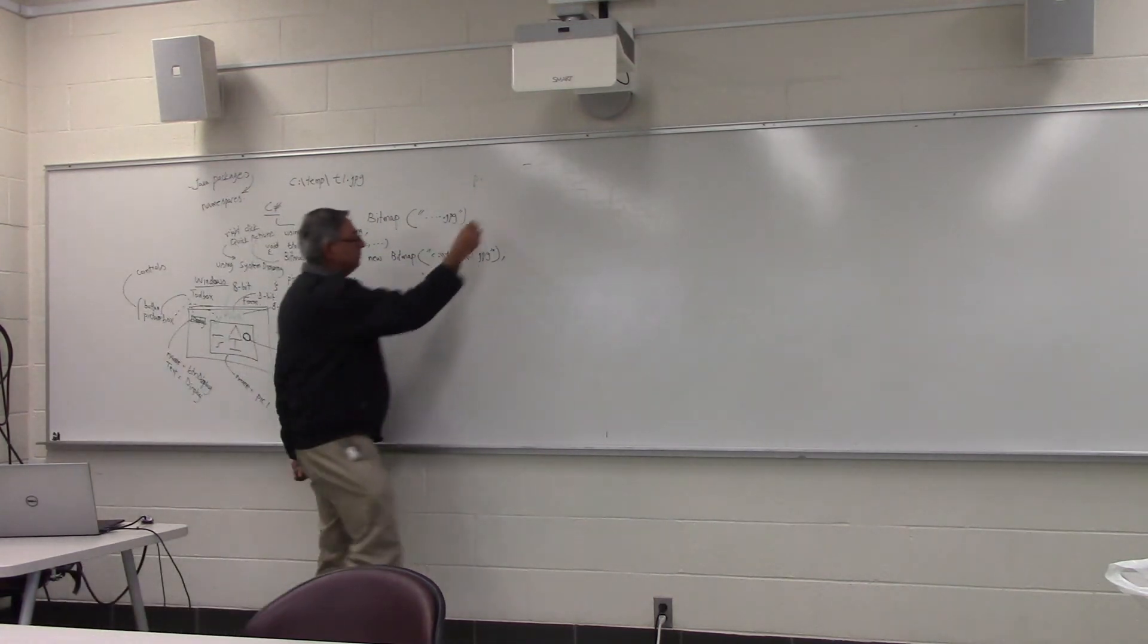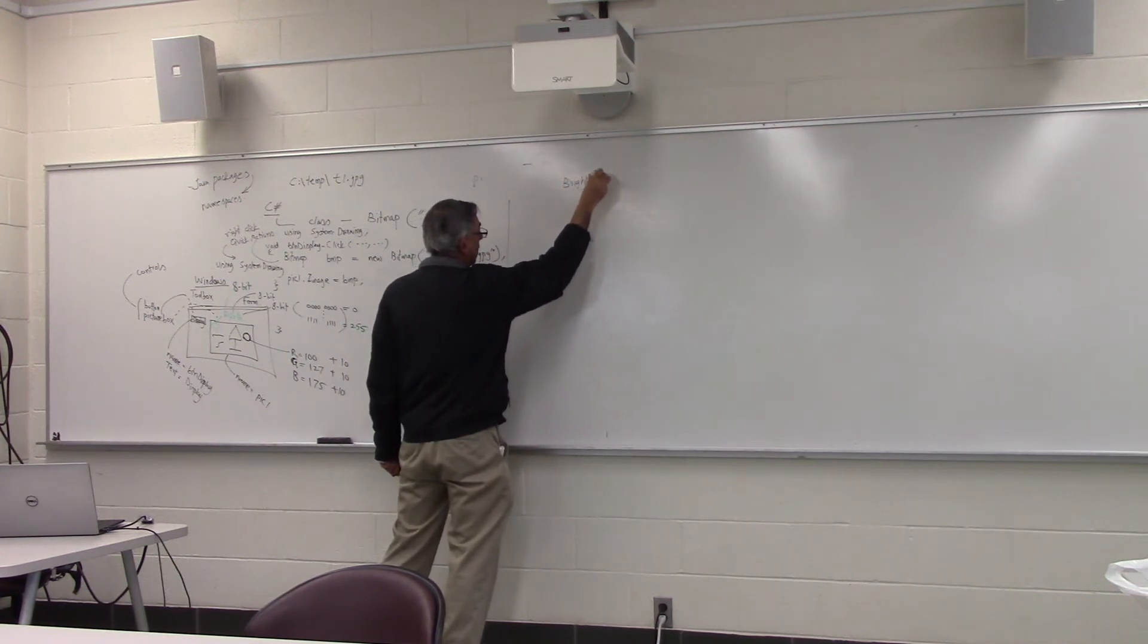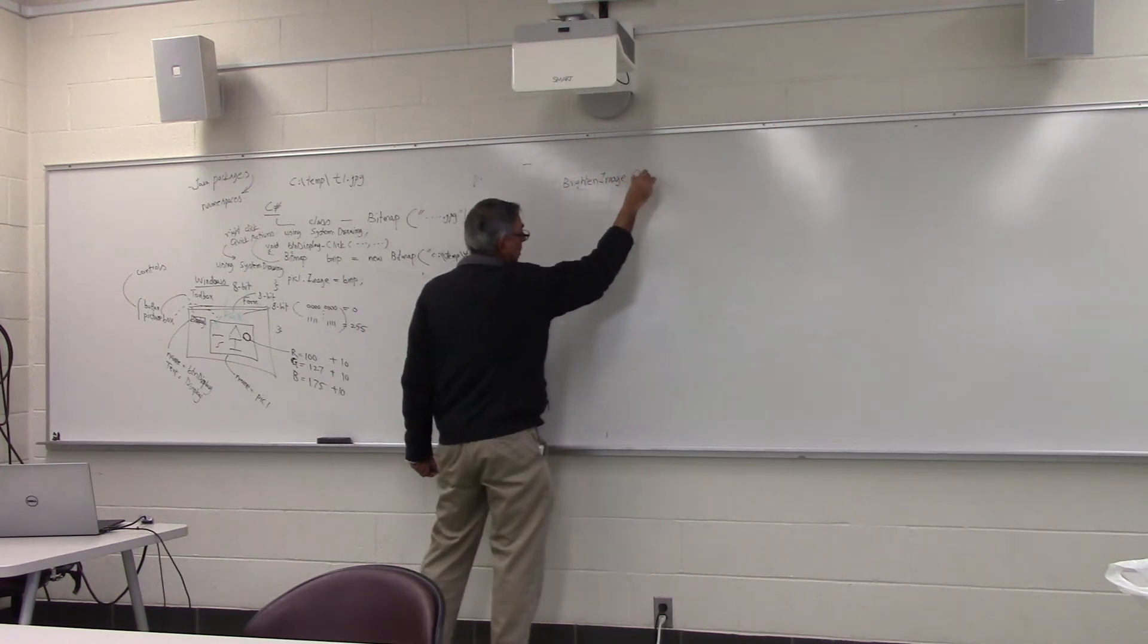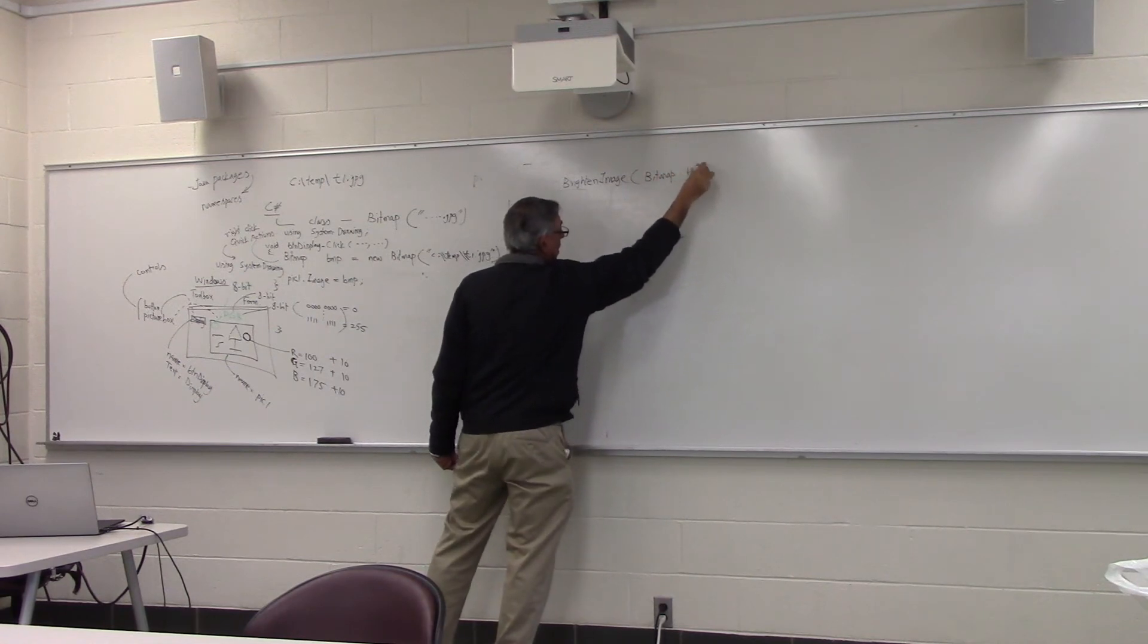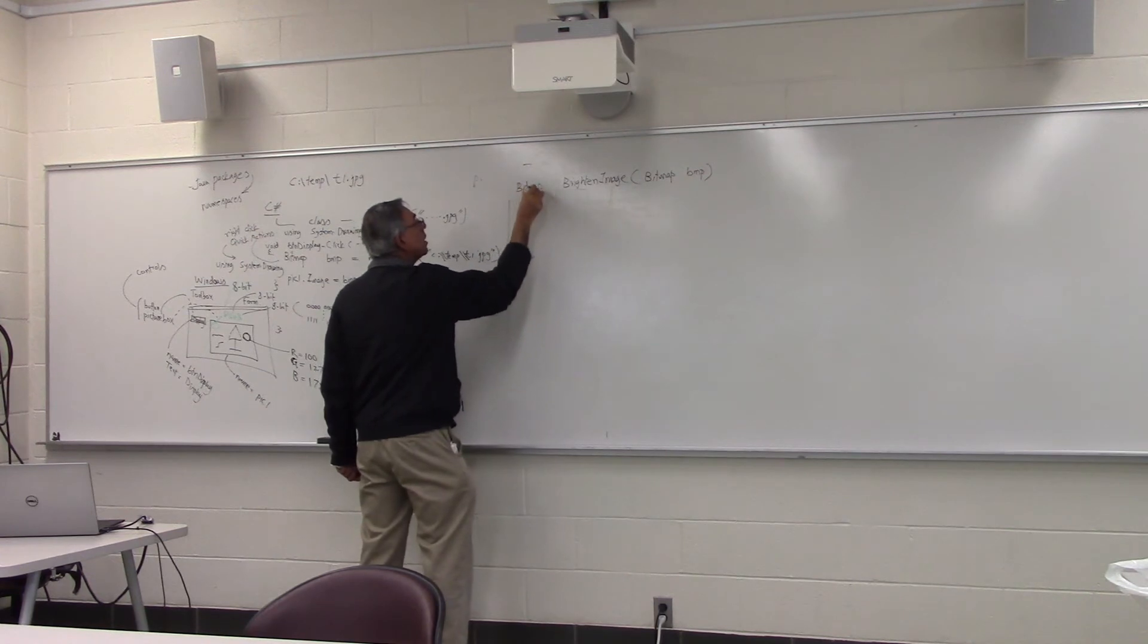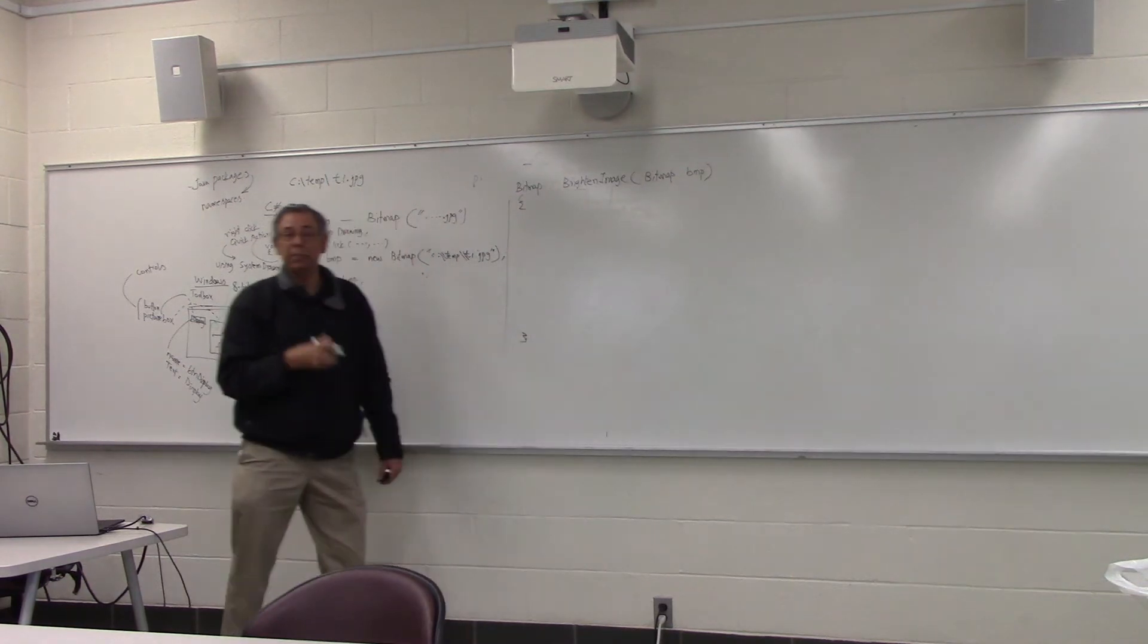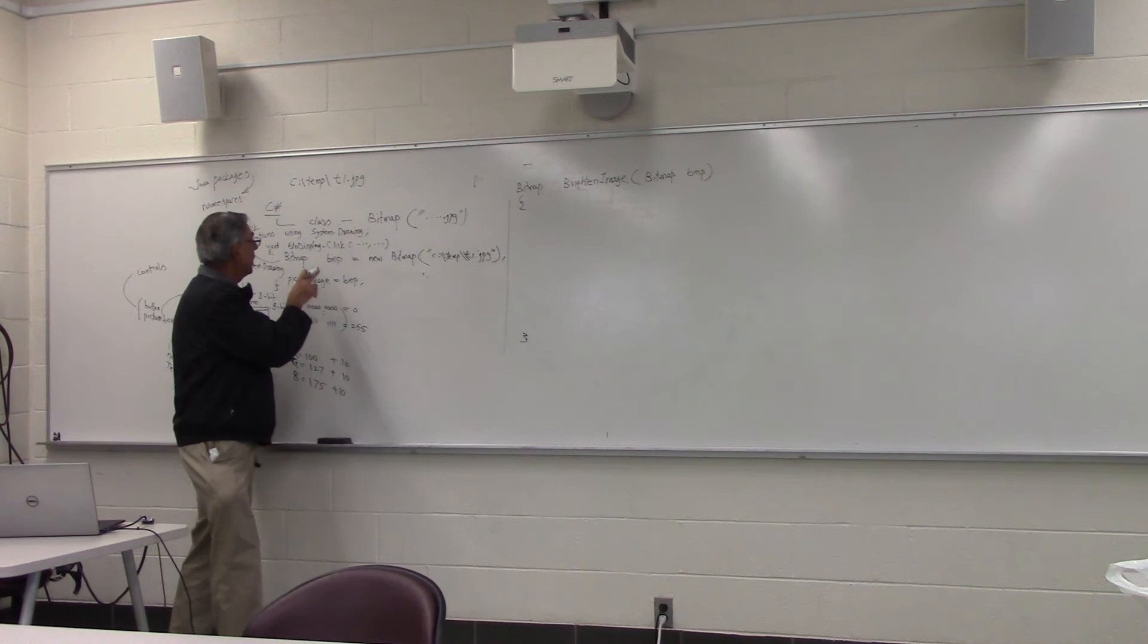Let's write a small function to brighten the image. Suppose somebody gives us a bitmap and we return a bitmap. Let's see what kind of code we will write to make the image brighter.